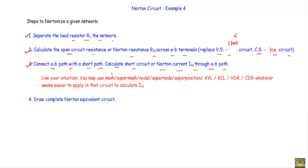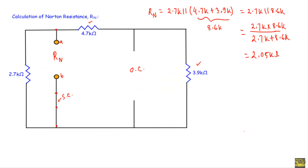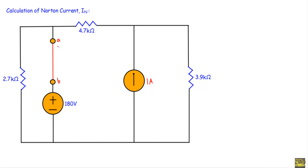To calculate the Norton current you may use mesh, super mesh, nodal, super node, superposition, KVL, KCL, voltage divider rule, or current divider rule. You have to find out which method is easier to apply in that circuit. In this circuit you can use the super mesh method, but here I will proceed with nodal analysis to calculate the Norton current.